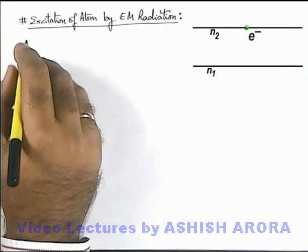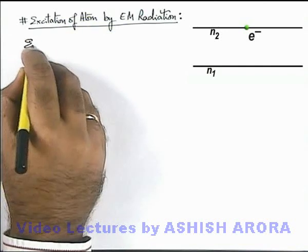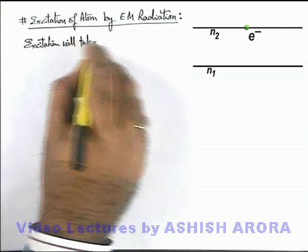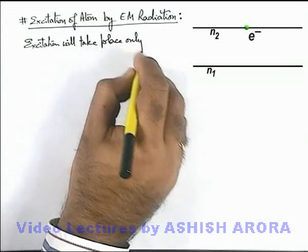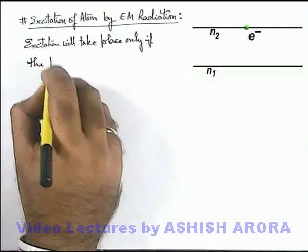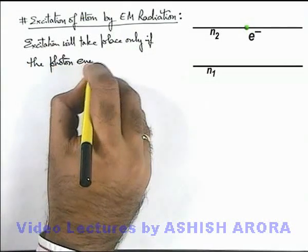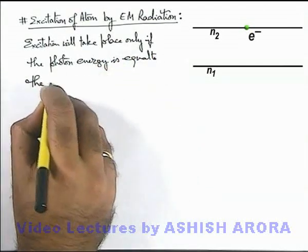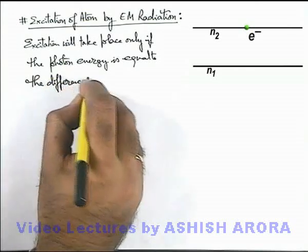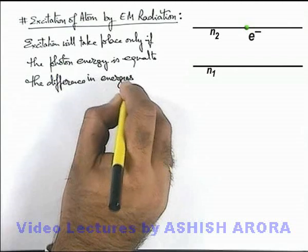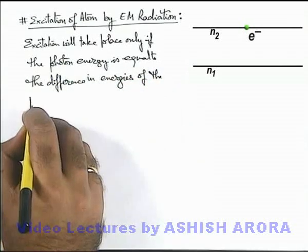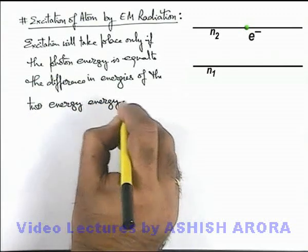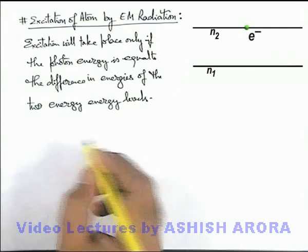Now in this situation, one important point we should note down that here excitation will take place only if the photon energy is equal to the difference in energies of the two energy levels or orbits which are involved in transition.